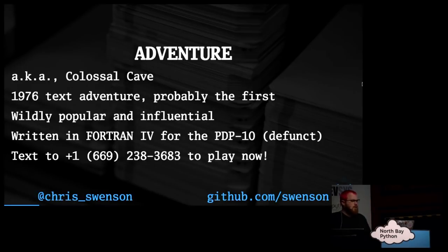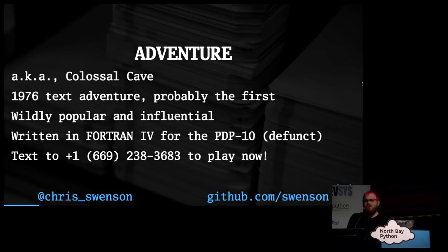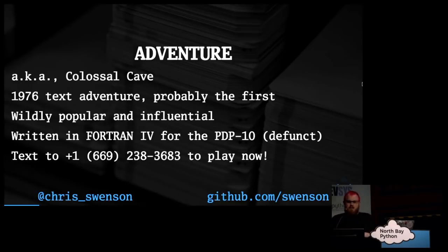I decided, why not do the first ever text adventure? That is called Colossal Cave, or sometimes called Adventure, depending on which version you get. Originally written in 1976, the first version with findable source code was from 1977. It was extremely popular, ported to dozens of different computers throughout the 70s and 80s, and some of the terminology used still lives on to this day.